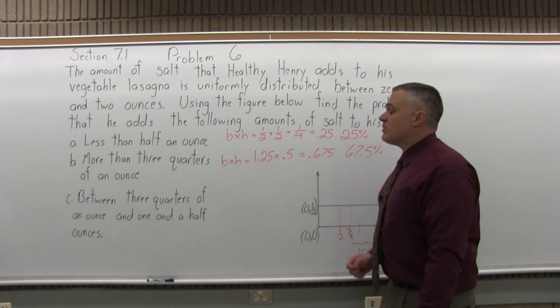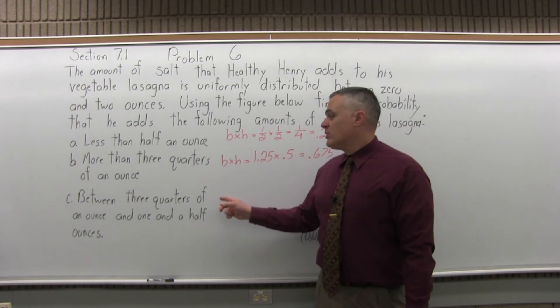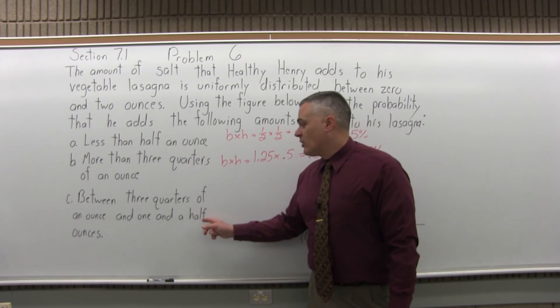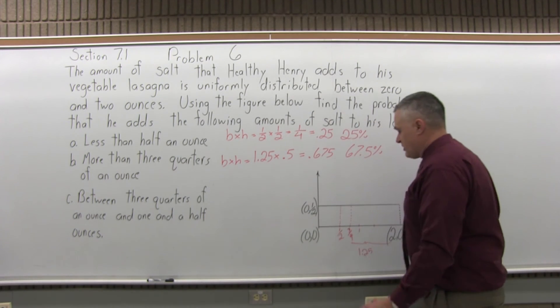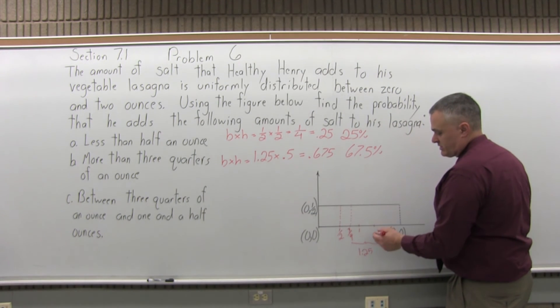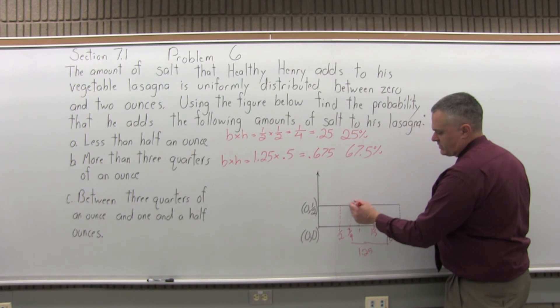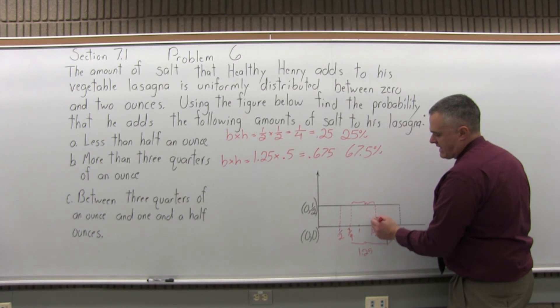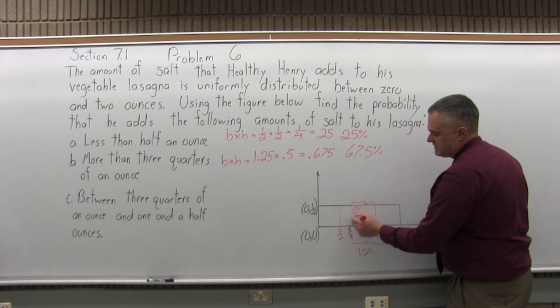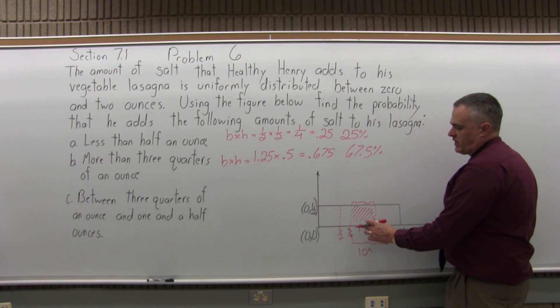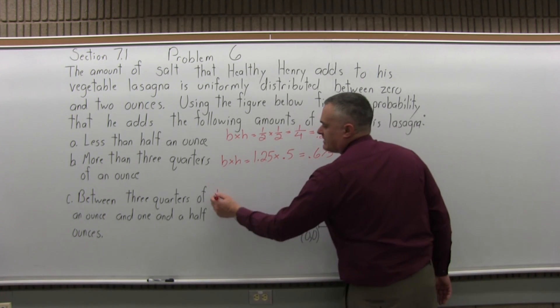And finally, what's the probability that he will add between 3 quarters of an ounce and 1 and a half ounces? So between 3 quarters, I have the 3 quarters thing here and 1 and a half. Let's do the between 3 quarters and 1 and a half. So it would be this area because I've already drawn on it just to make it stand out a little bit more. So we want to do base times height.